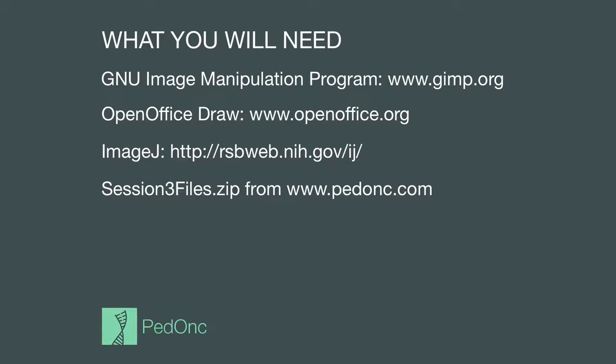Whenever working with data, especially research data, it is critical to keep unaltered original copies of data files. Please extract and copy the session3files folder from the session3files.zip file. For this session, we'll be using GIMP version 2.8.10, OpenOffice version 4.0.1, and ImageJ version 1.47. There may be newer versions of these programs available now; in that case, please run the latest version. It should still be possible to follow along as most tools and concepts are consistent across versions of the software.